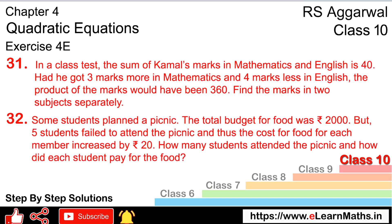Let's do question number 31 of exercise 4E, that is quadratic equation. Question number 31: In a class test, the sum of Kamal's marks in mathematics and English is 40.